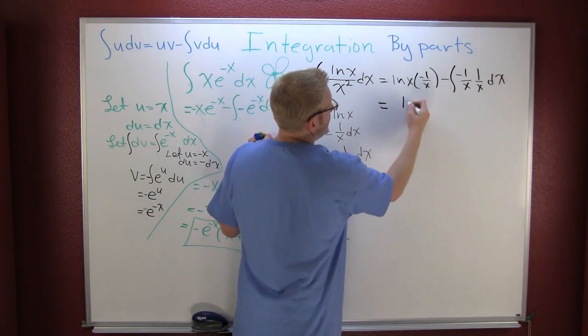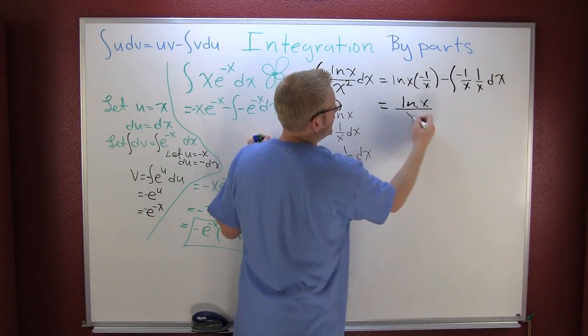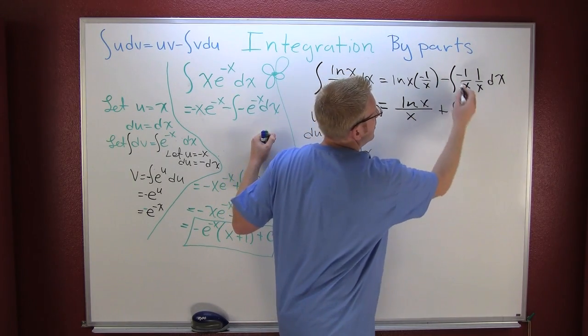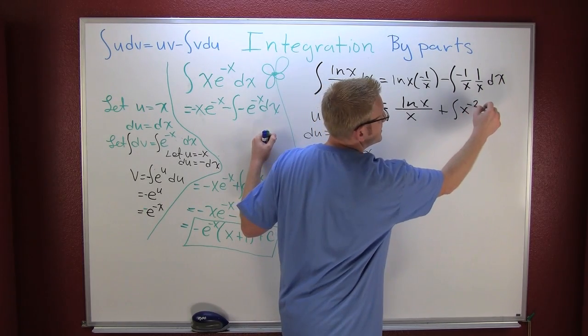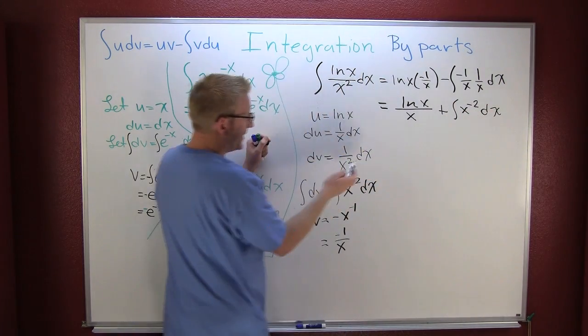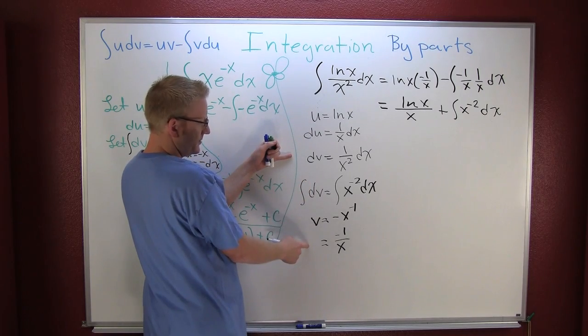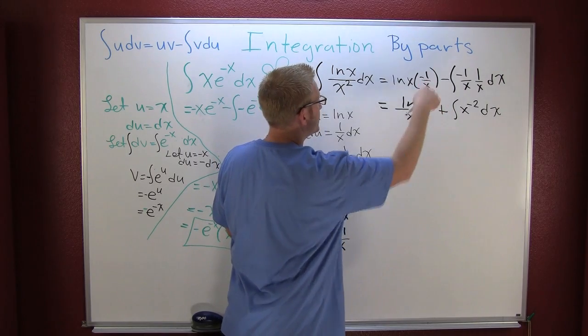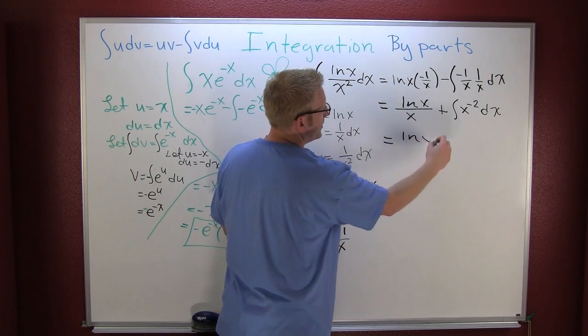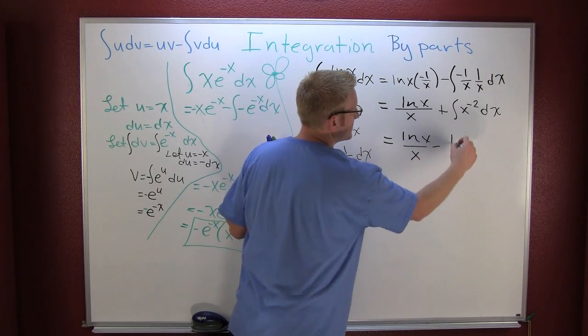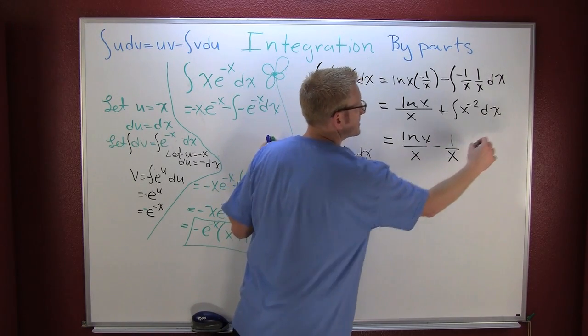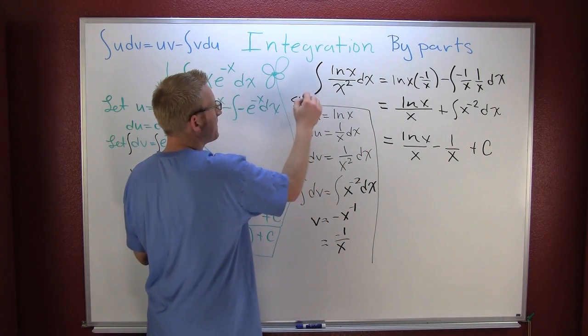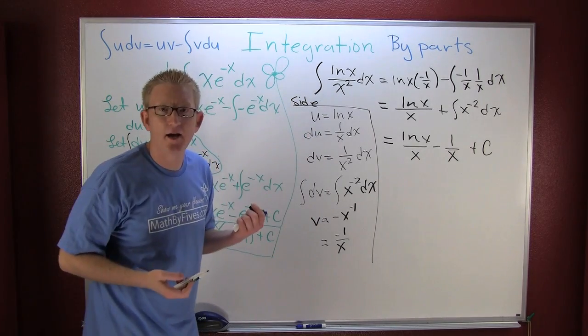This is the natural log of x all over x minus, and minus make plus, the integral of x to the minus two dx. And then we know how that guy integrates. And then the minus and minus, already took care of it. This is the natural log of x over x minus one over x plus my c.